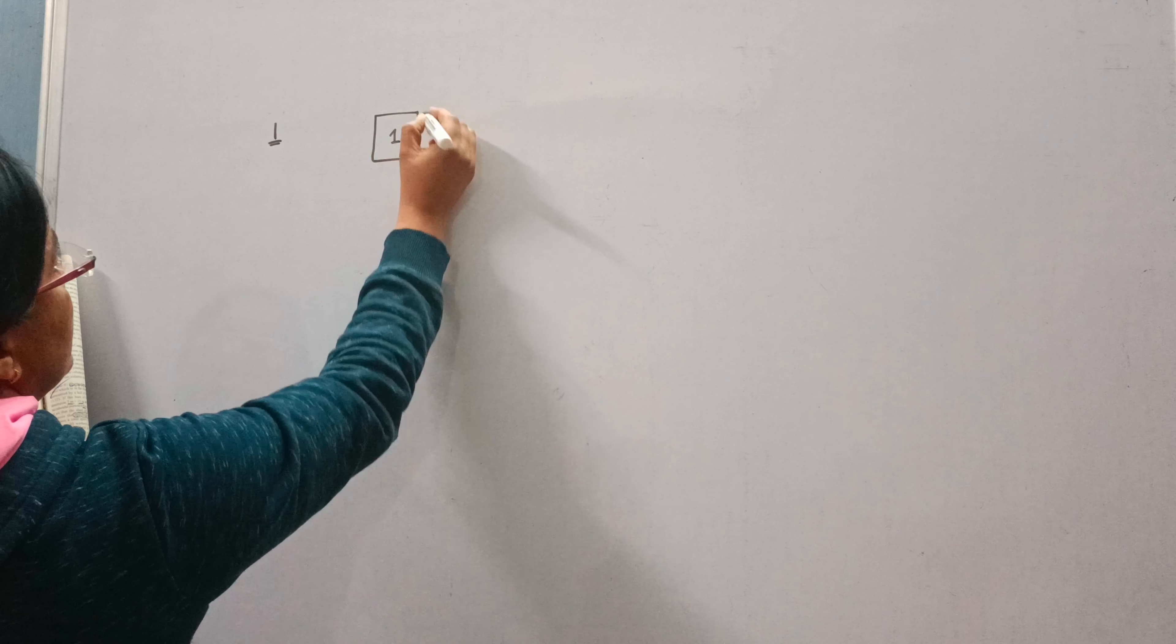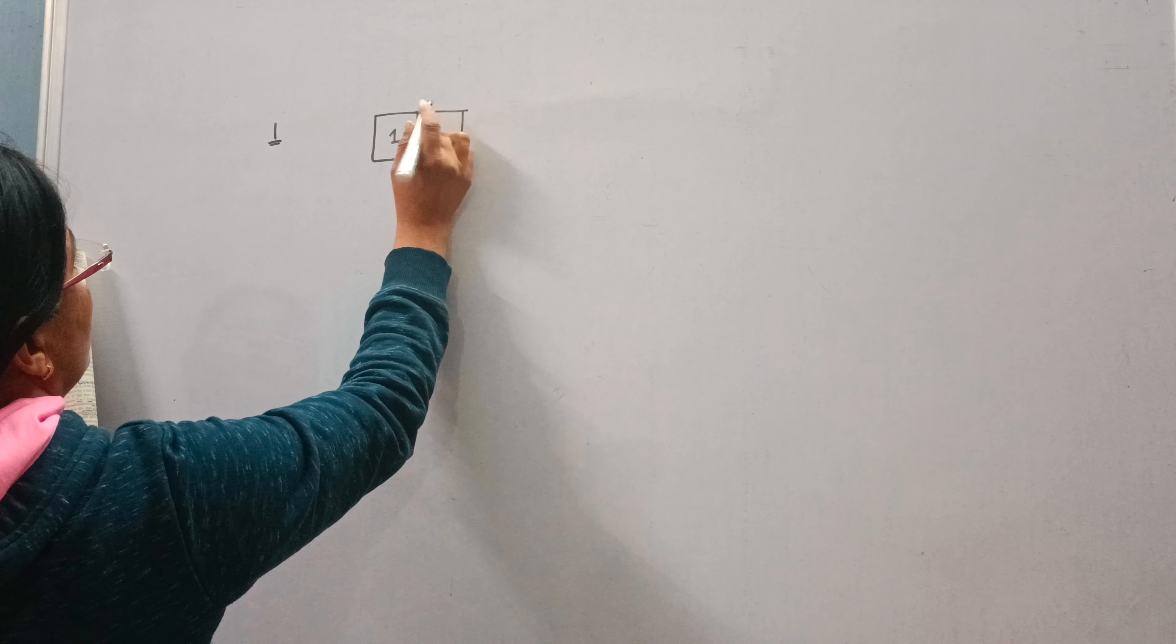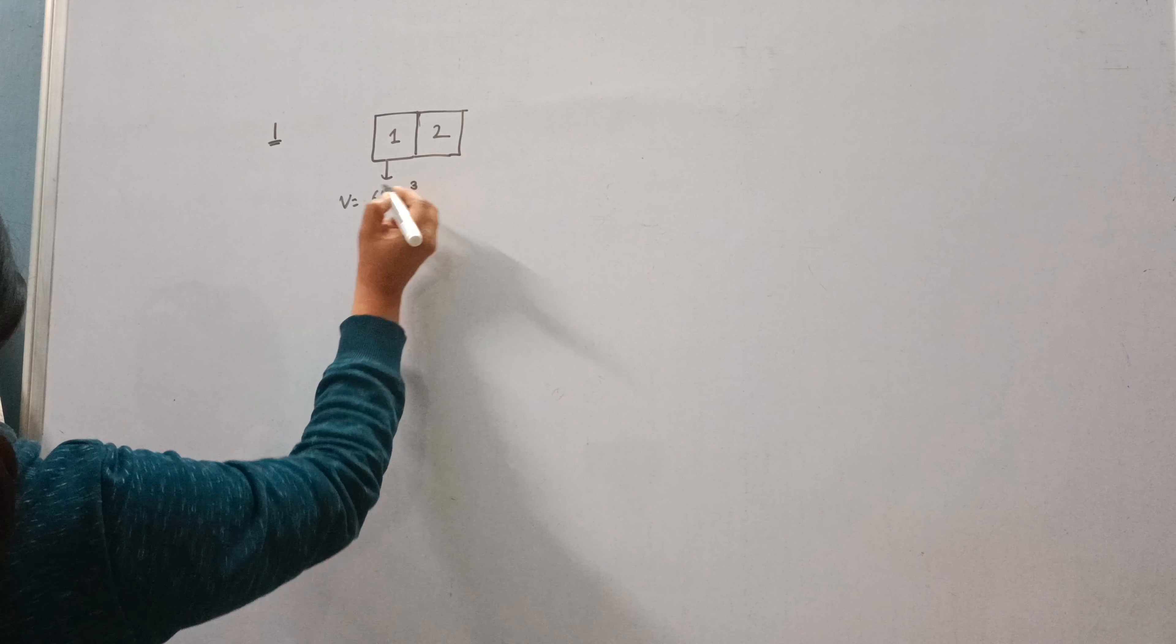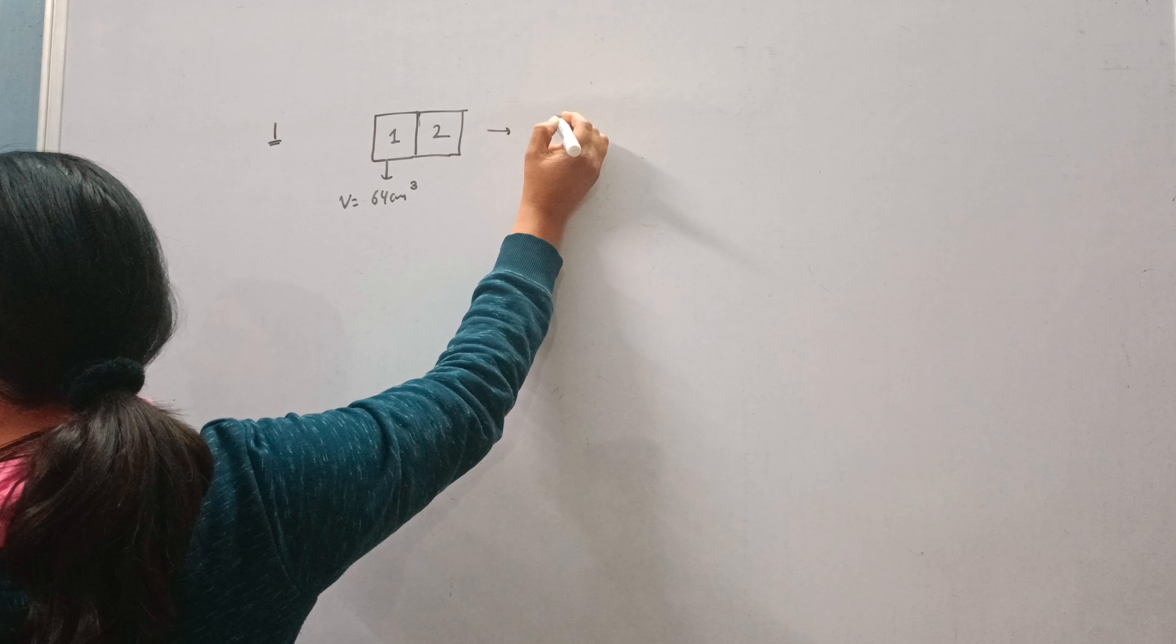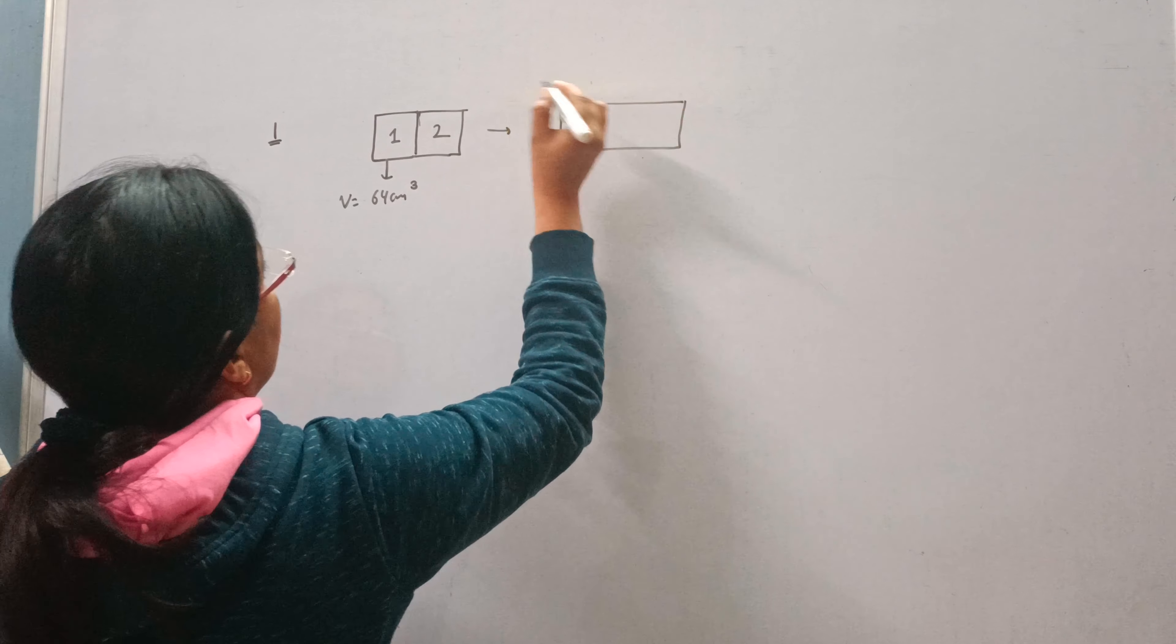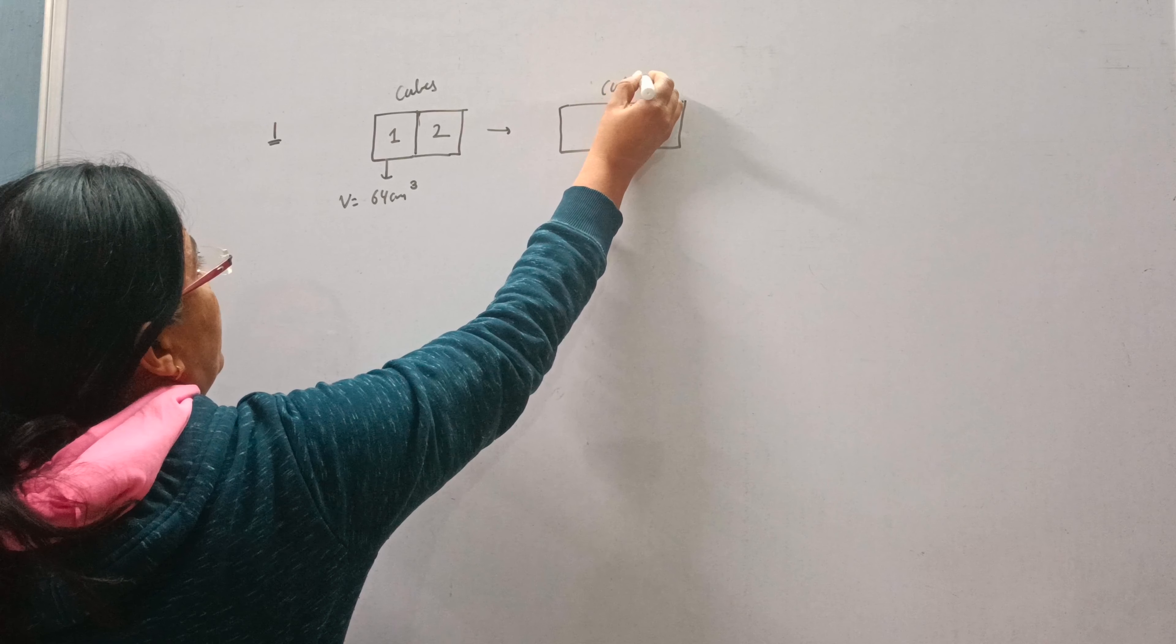First cube is this and second one is this. 2 cubes of volume 64 cm³ are joined end to end. Find the surface area of the resulting cuboid. When these 2 cubes are joined, then a cuboid is formed. So these are the cubes and this is the cuboid.